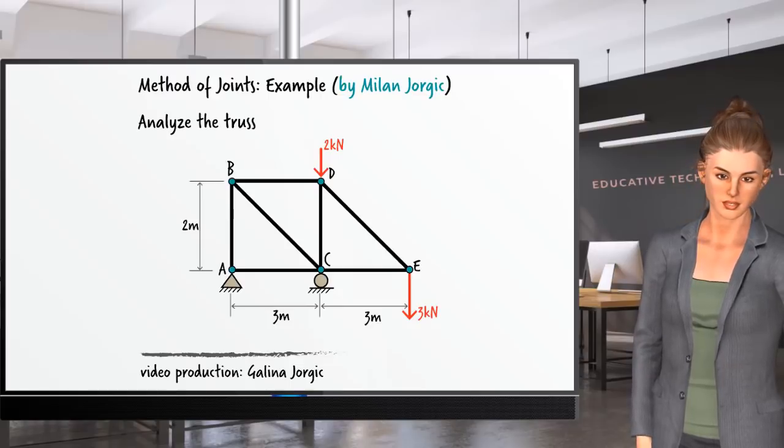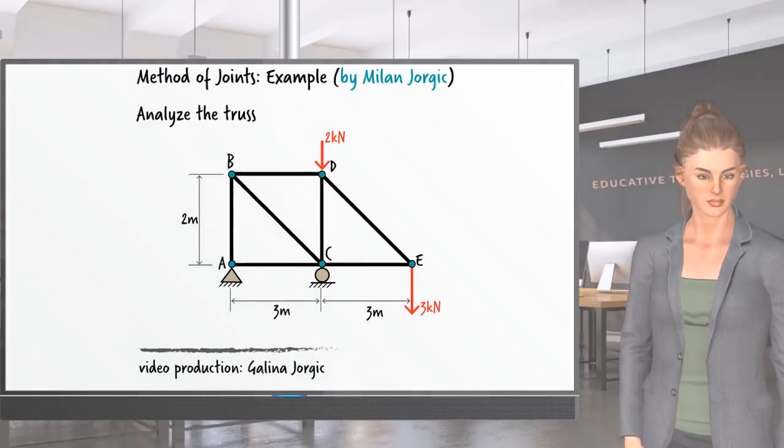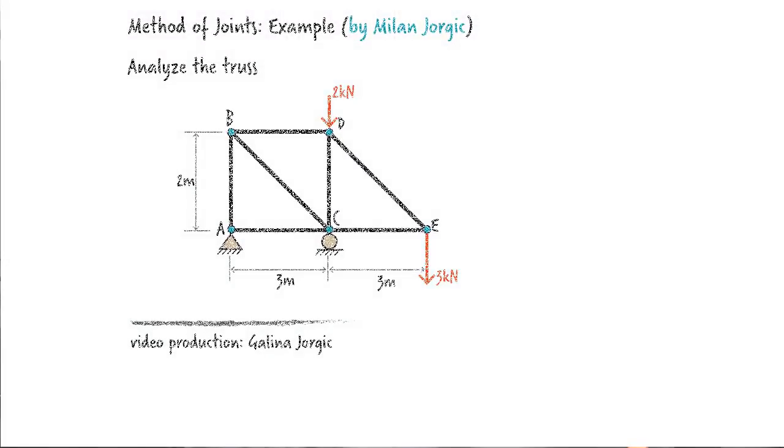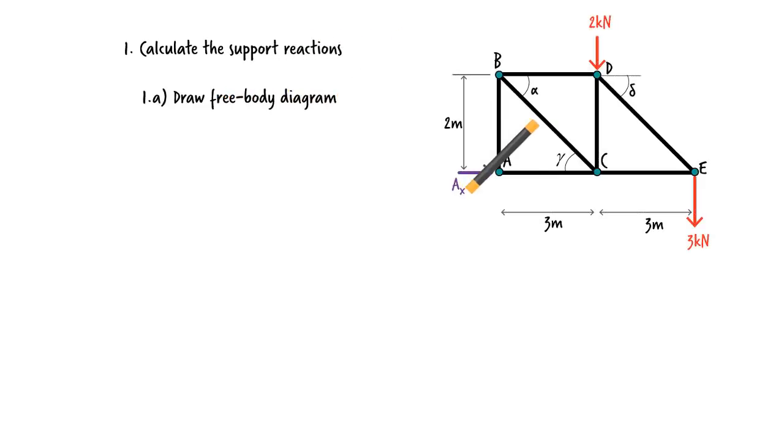Let's analyze this truss using the method of joints. We can start by calculating its support reactions. To determine the reactions, first we draw the free body diagram for the entire structure. Note the unknown reaction forces. We have labeled them Ax, Ay, and Cy.